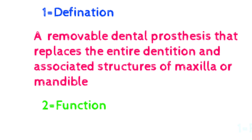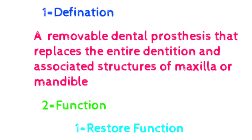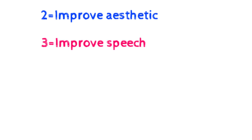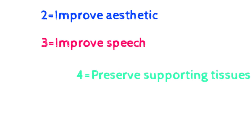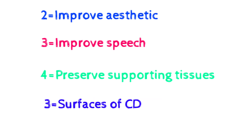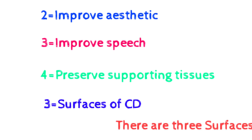The functions of complete denture are: first, it restores the function of the patient, because due to loss of natural teeth the patient's function is compromised. Second, complete denture improves aesthetics, as loss of natural teeth compromises appearance, and the denture supports the lip and cheek. Third, it improves speech, because the presence of teeth improves speech. Fourth, it preserves supporting tissue like bone and prevents further resorption by equally distributing forces.